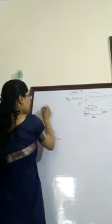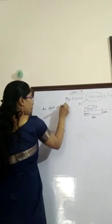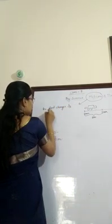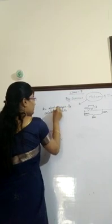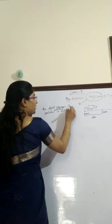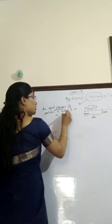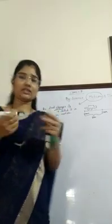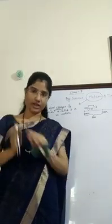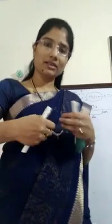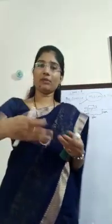Motion means an object changes its position with respect to time. For example, suppose I am at initial position zero at zero minutes. After one minute, I travel some distance and my position changes from there to here. That means I myself am in motion.